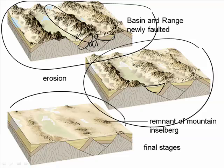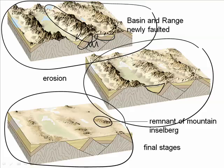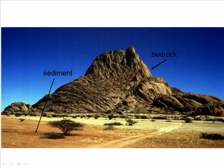Finally, in the last diagram, there's nothing left of the mountain ranges. The only thing remaining might be a small remnant of bedrock surrounded by sediment, referred to as an inselberg. In this picture, you can see the bedrock surrounded by sediment — an inselberg.